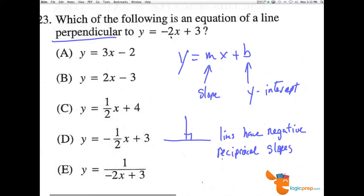The slope here is negative 2. If m equals negative 2 of the original, then we're going to have m being equal to 1 half, which is the negative reciprocal of negative 2.